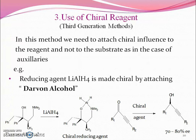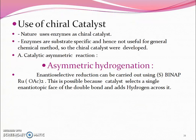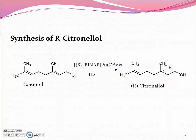Use of the chiral reagent. In this method, we attach chiral influence to the reagent and not to the substrate, as in the case of auxiliaries. An example is the use of Darvon alcohol as a reducing agent. Use of the chiral catalyst includes asymmetric hydrogenation — for example, the synthesis of R-citronellol is done using BINAP as a catalyst.